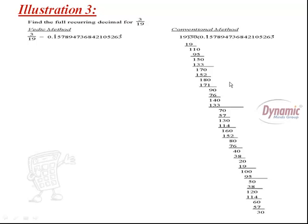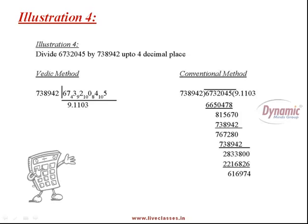And similarly, you can yourself see the division sum 3 by 19. The conventional method is giving the answer in so many long steps, while the Vedic Maths answer, you can get the answer of 18 recurring places in less than 10 seconds. One more illustration of division I want to show you. See here, the divisor is so big, but still you are getting the answer in one line.